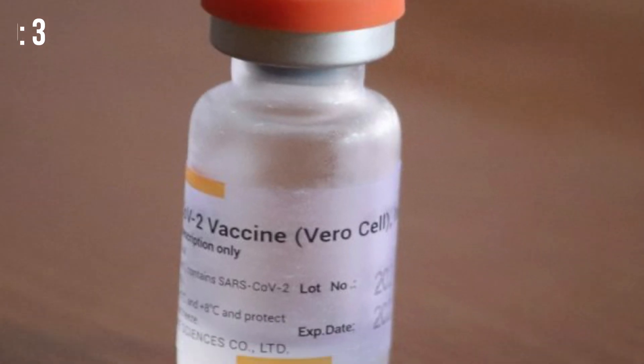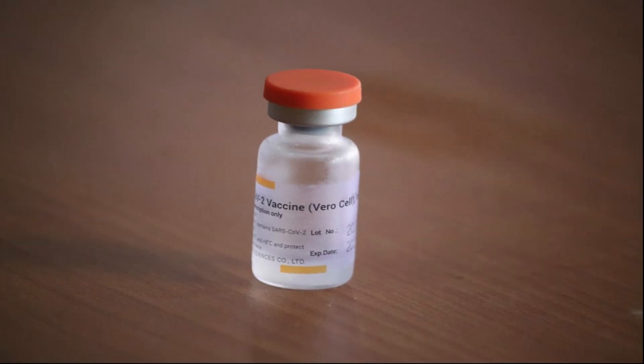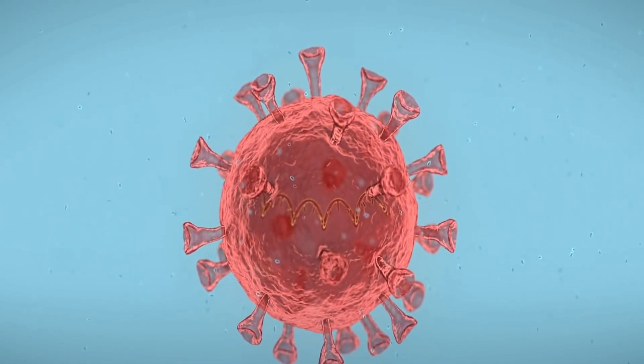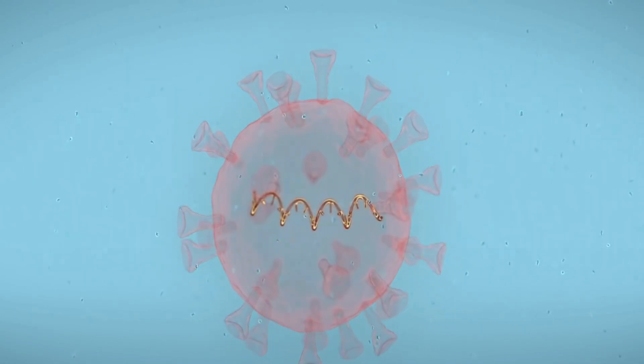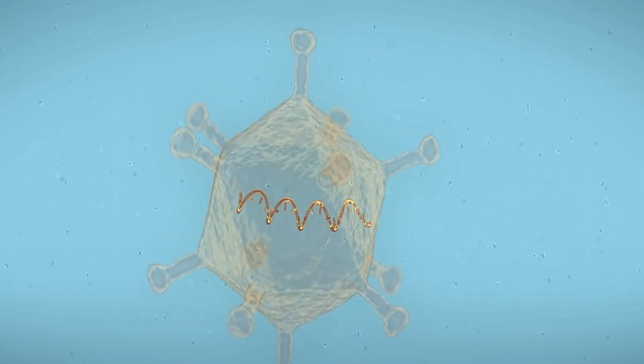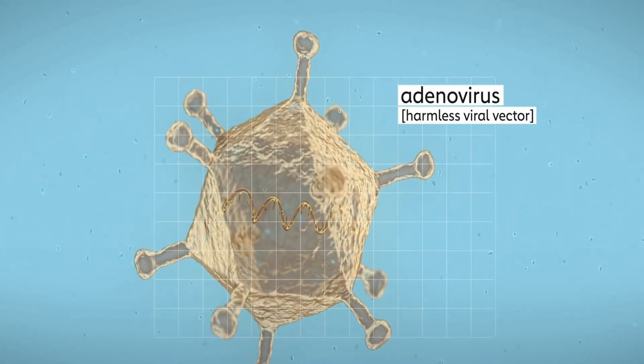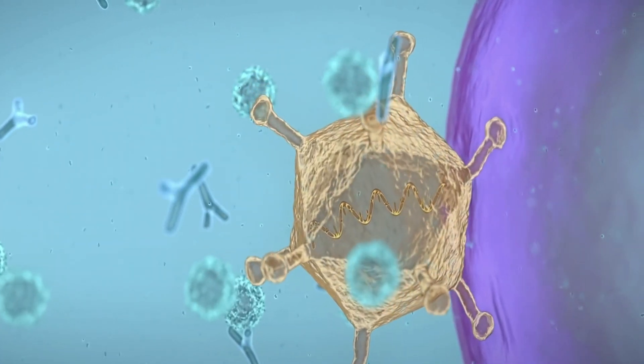Vector vaccines contain a modified version of a different virus than the one that causes COVID-19. Inside the shell of the modified virus, there is material from the virus that causes COVID-19. This is called a viral vector.